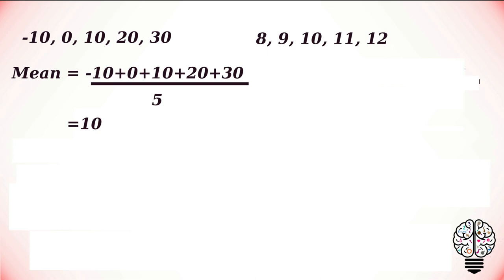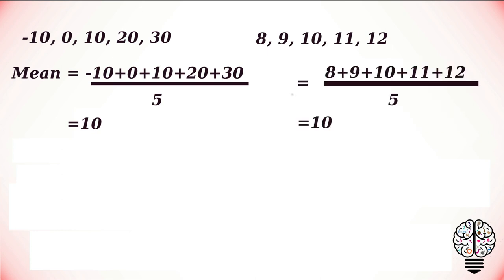If we calculate the mean for the second data set, we also arrive at the mean 10. Considering the difference, in the second data set all the numbers are almost close to 10, but in the first data set we can see a varied difference.